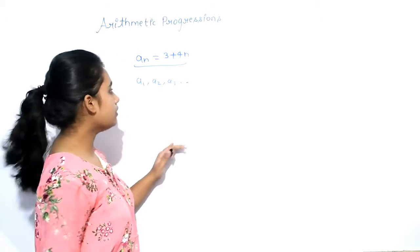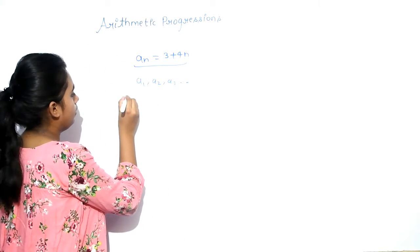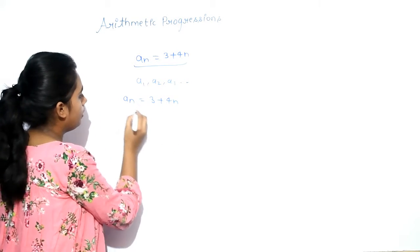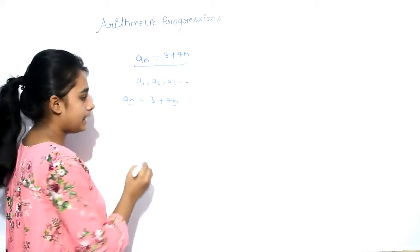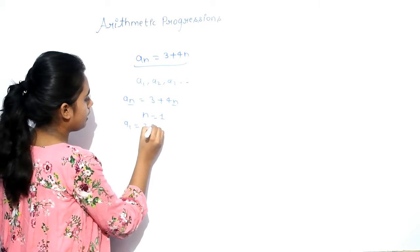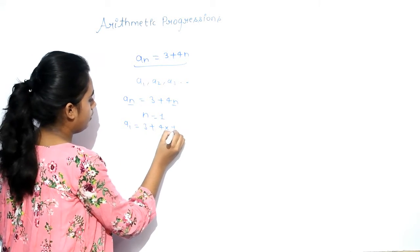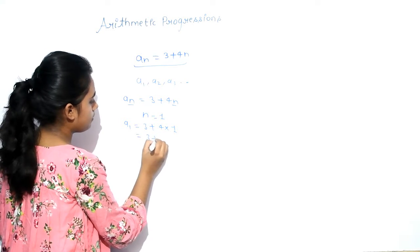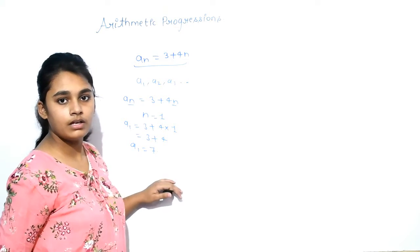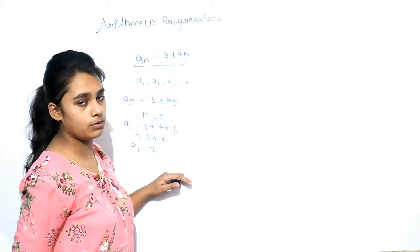Firstly, this is very simple. We have to only write the value of N. We have to firstly write N equals to 1. So we get A1 equals to 3 plus 4 into 1, and 3 plus 4. So we get A1 equals to 7. It means our first term of AP is 7.